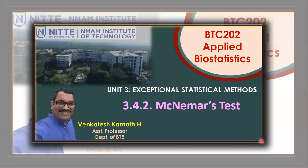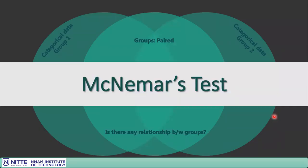Hello and welcome for this video lecture on McNemar's test. We have two categorical data groups — group 1 and group 2 — and these two variables represent paired data. We would like to test whether these two paired groups have any relationship between them, and this evaluation is performed using McNemar's test.